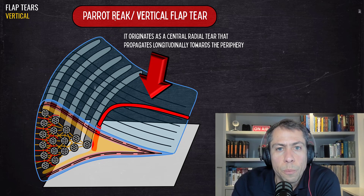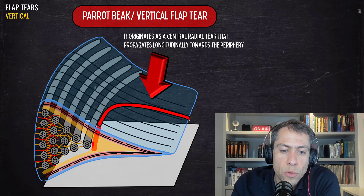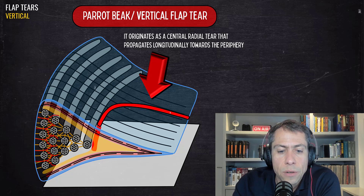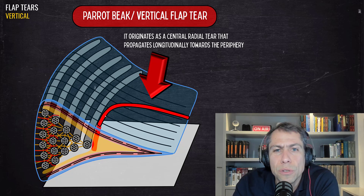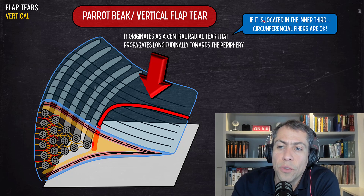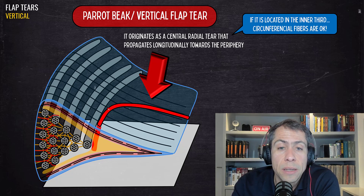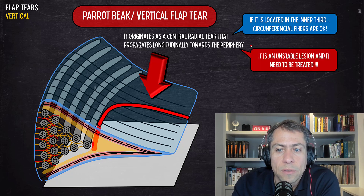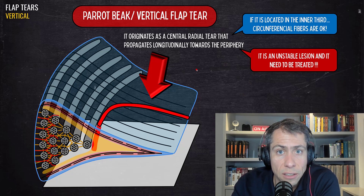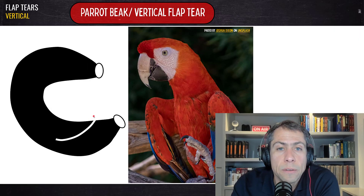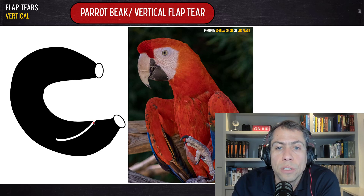The vertical flap tear is also known as the parrot beak tear. It originates as a central radial tear that propagates longitudinally towards the periphery of the meniscus — it starts as a radial tear and turns into a longitudinal vertical tear. If located at the inner third, the circumferential fibers are intact, but if it reaches the periphery it compromises those fibers. The bottom line is it is an unstable lesion and needs to be treated most of the time surgically.